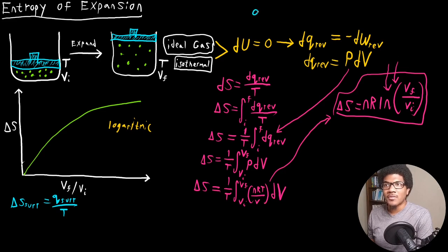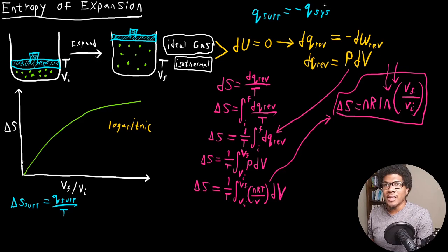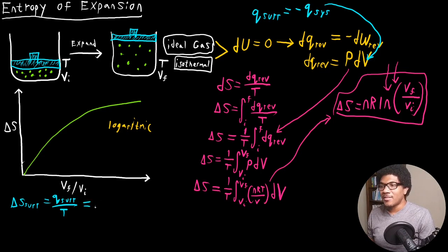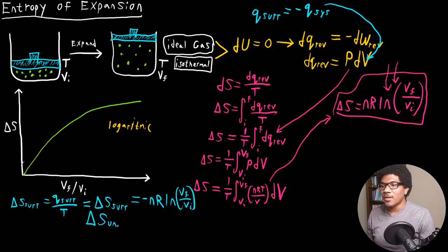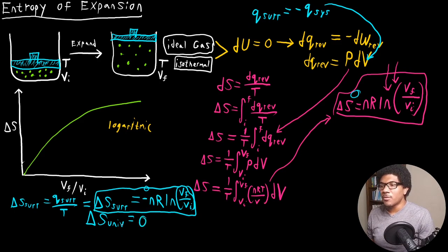The heat transfer for the surroundings is just the negative of the heat transfer of our system, in accordance with the first law of thermodynamics: Q_surroundings equals negative Q_system. This is the same heat transfer we just calculated for our reversible system. So ΔS for the surroundings is going to be equal to negative NR ln(VF/VI). If we calculate ΔS for the universe — the sum of the system and surroundings terms — these two terms cancel out, giving us ΔS_universe equal to zero.